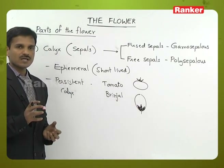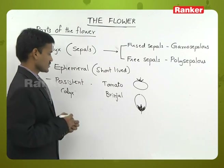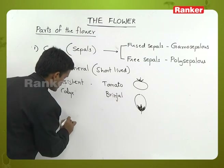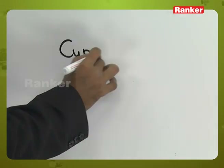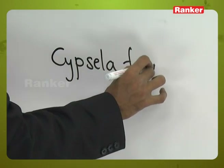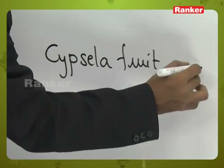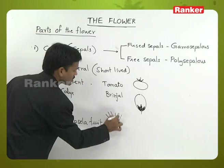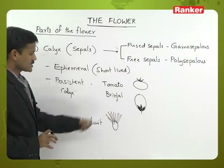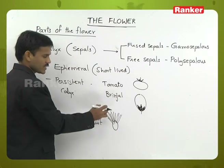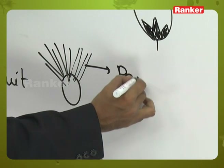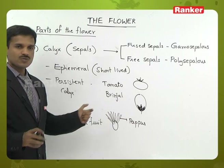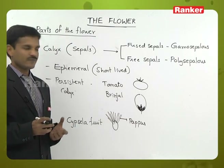Sometimes the sepals are in hair-like structures. In the cypsela fruit, a number of hair-like sepals are present. This is also persistent calyx. The persistent calyx in this case is called pappus. Pappus is useful for the dispersal of fruit.